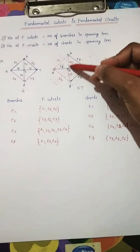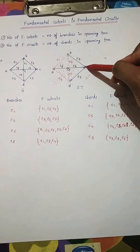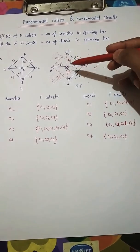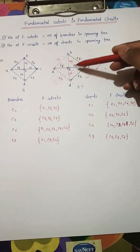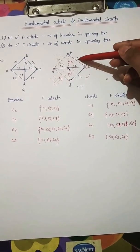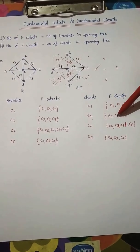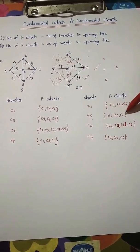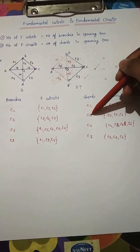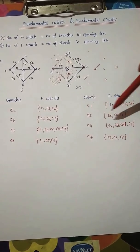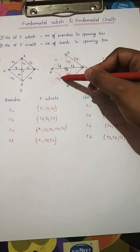For chord e5, we have one chord and more than one branch. Taking those two branches, the fundamental circuit for e5 is {e2, e5, e6}.